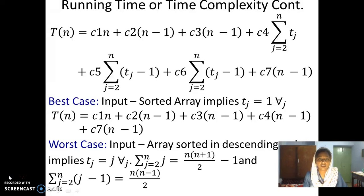What happens if the input is sorted in the reverse order, that is in the descending order? It means that whenever I take out a key, I have to move it to the far left end of the array. That means every time, every key has to be compared with every other element in the array.